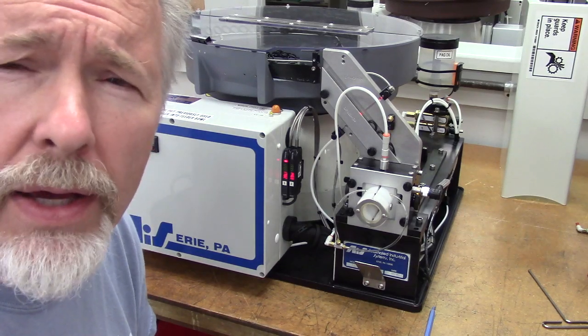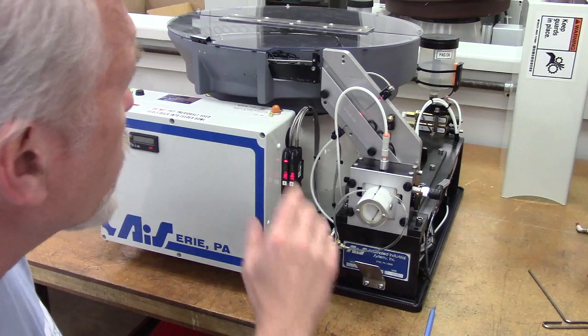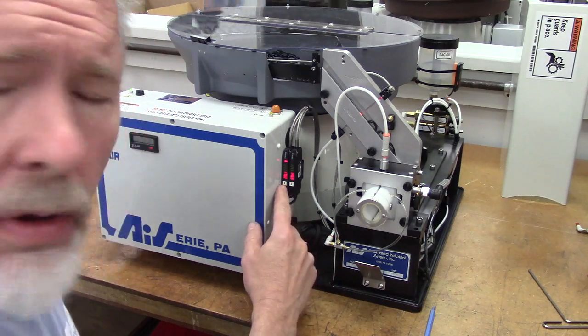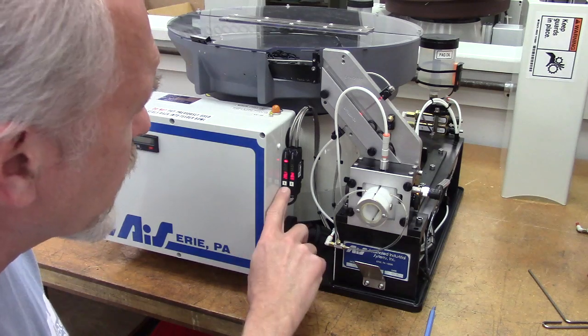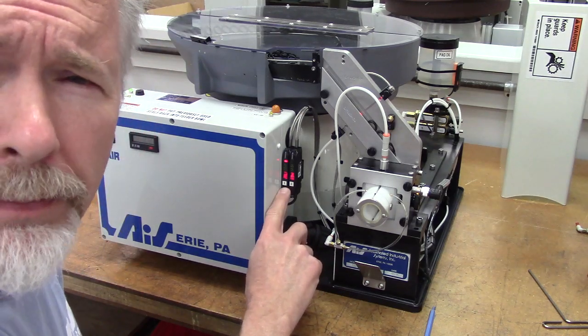We are talking about photo eye adjustment. We're going to be working with this amplifier that is closest to the control box. This particular machine is marked with a number one.